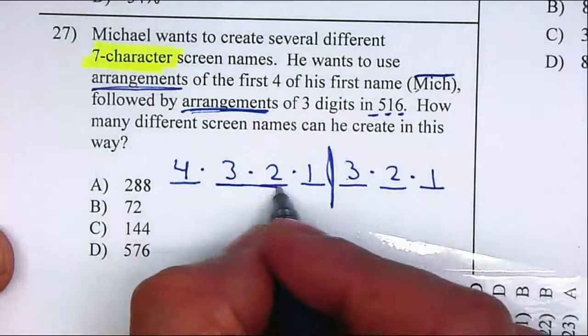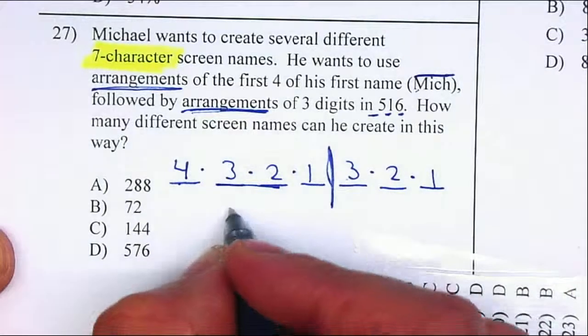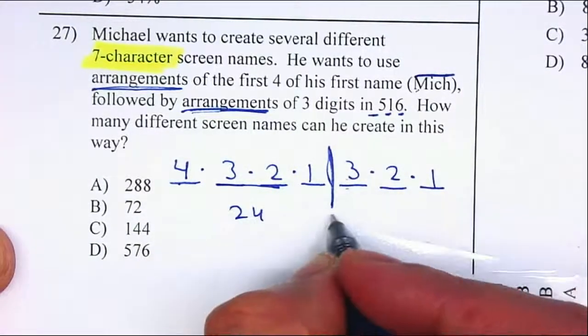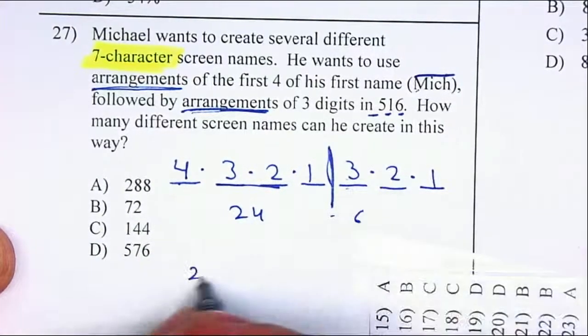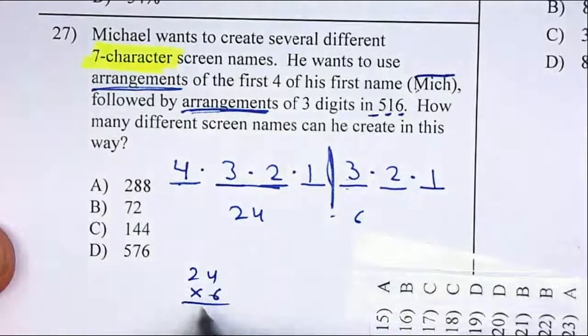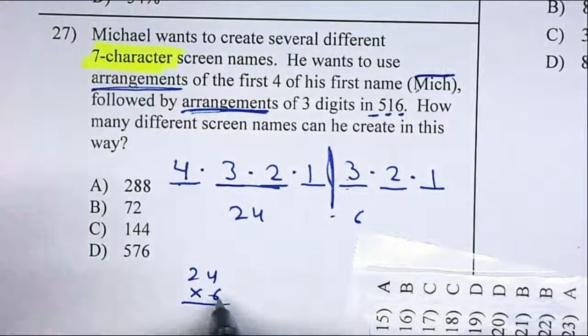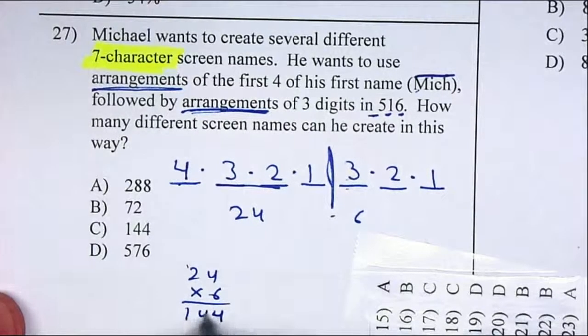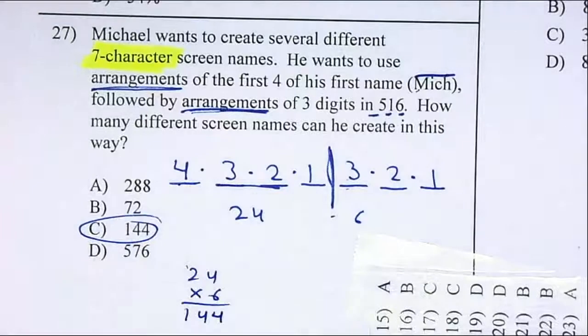So multiply this gives me six times four gives me twenty-four. That gives me six. So multiply twenty-four times six. That gives you twenty-four, carry two, that will be fourteen. A hundred and forty-four different ways that you can come up with a screen name.